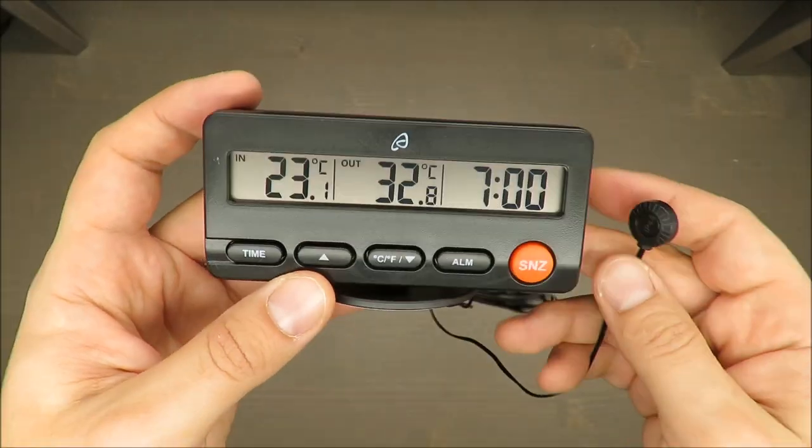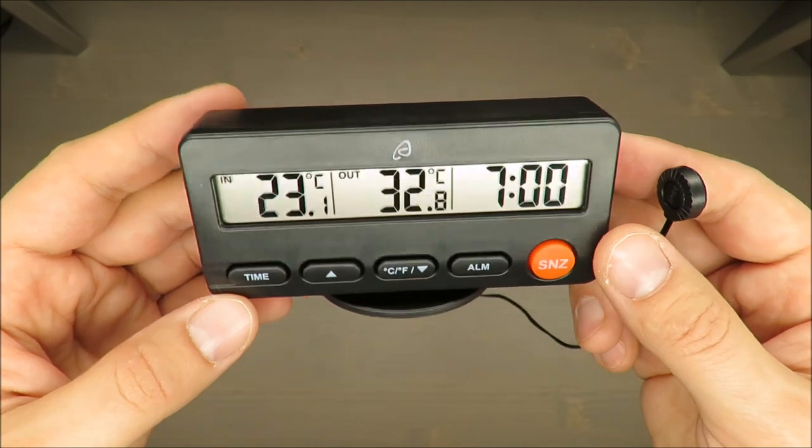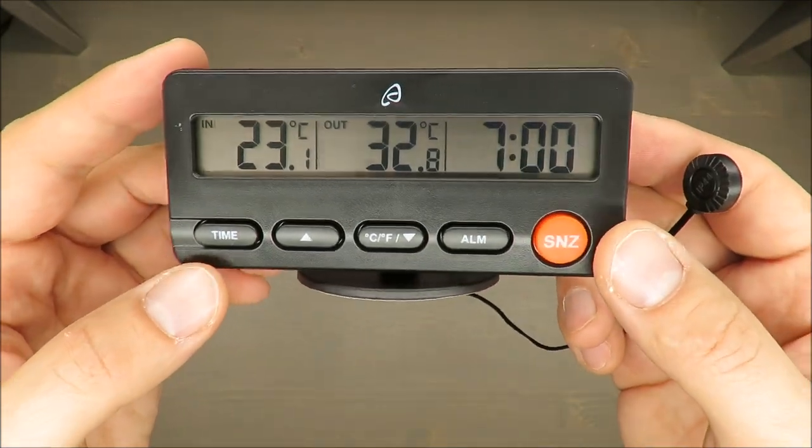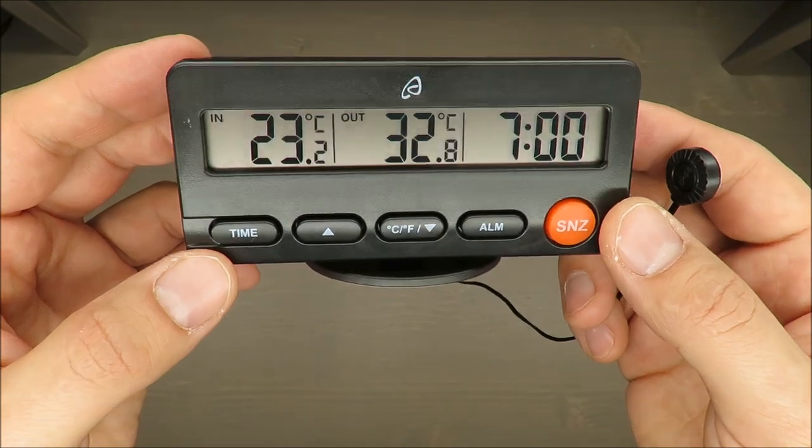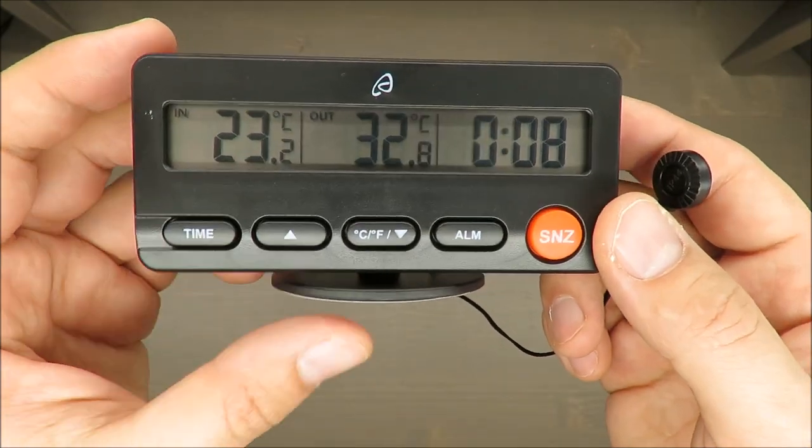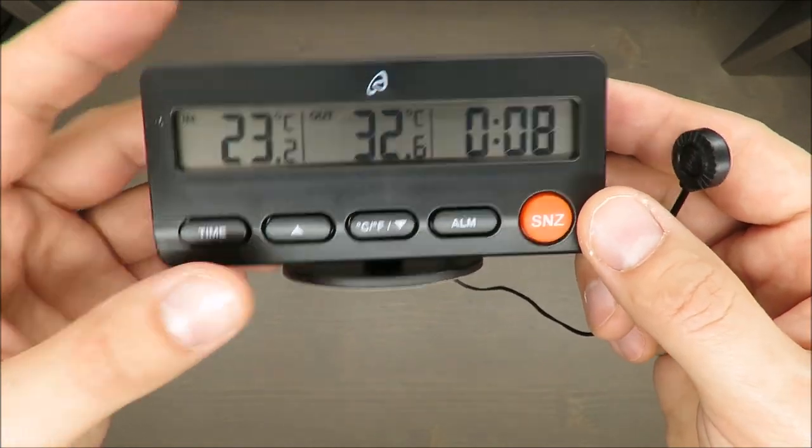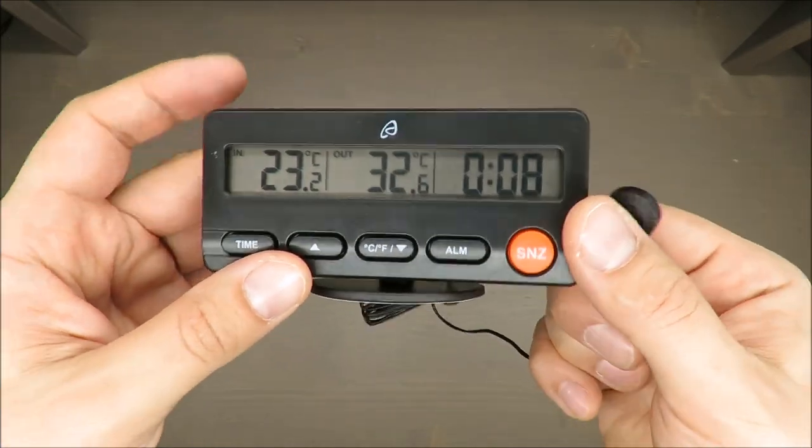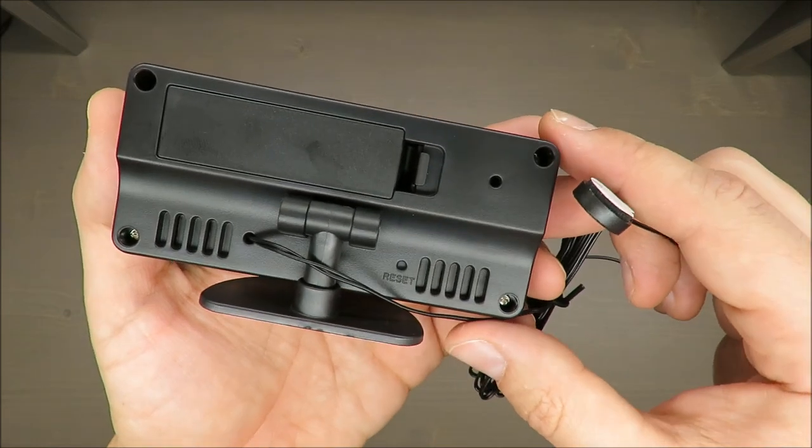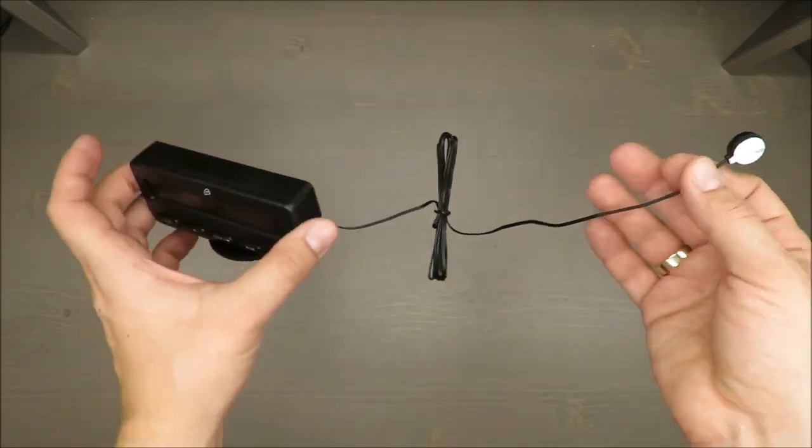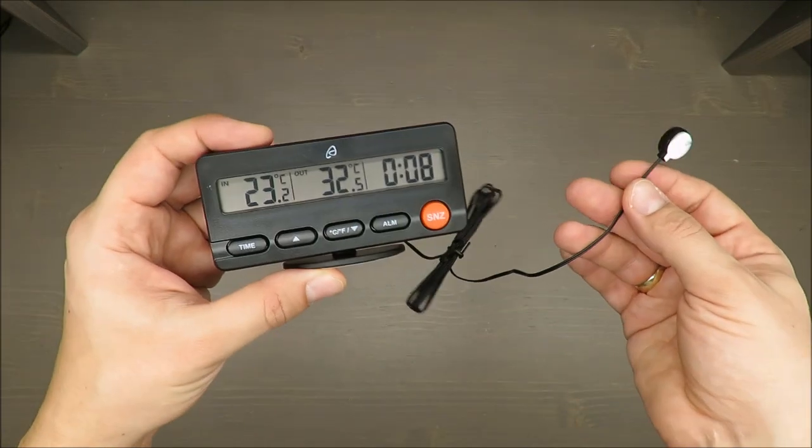So why do I think it's pointless? In these days, almost all cars have on-board temperature measurement and clock as well, so it's very relevant for old cars. And if you want to use it at home, the sensor is on a cable, so that means you need to be quite close to the window.